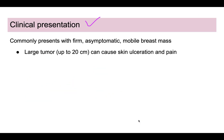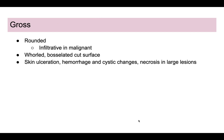Clinically, the patient will present with a firm, asymptomatic, mobile breast mass, mostly in an older age group. The breast mass is mostly larger in size and can grow even up to 20 centimeters. It can also cause skin ulceration and pain due to its large size.